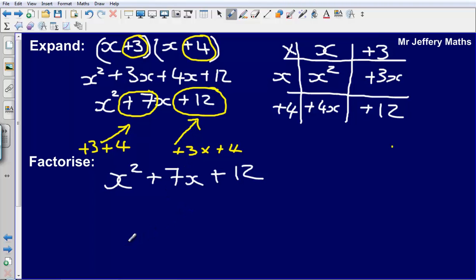However, if I didn't know that, what I would be looking for are simply two numbers that would be adding to make this plus 7 in the middle but multiplying together to make the number on the end.